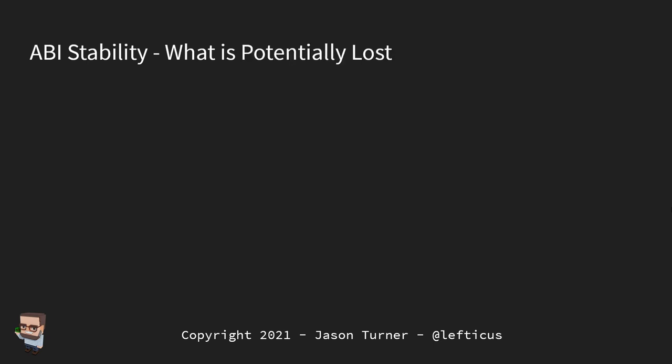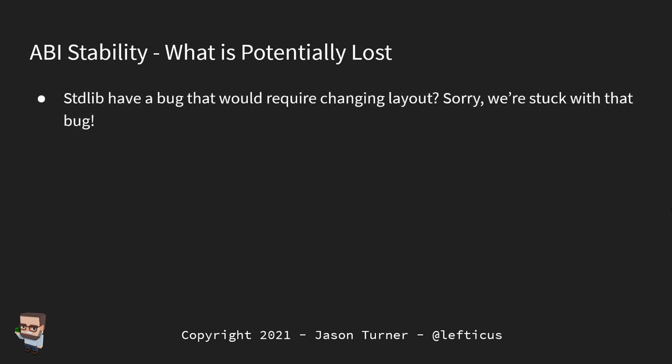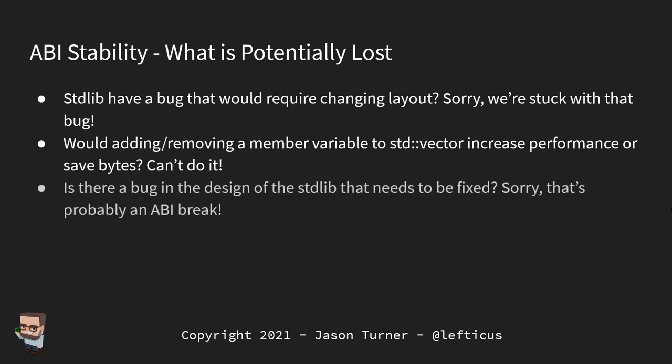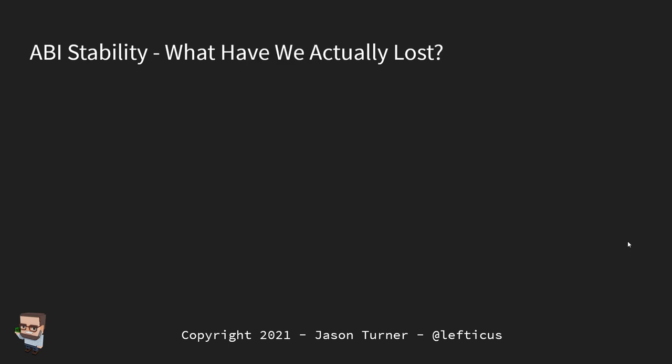What have we theoretically lost? The standard library might have a bug that would require changing the layout — sorry, you're stuck with that bug. Would adding or removing a member variable from std::vector improve performance or save bytes? Sorry, can't do that. Is there a bug in the design of the standard library that needs to be fixed? Sorry, that's probably an ABI break. That's the theoretical side.